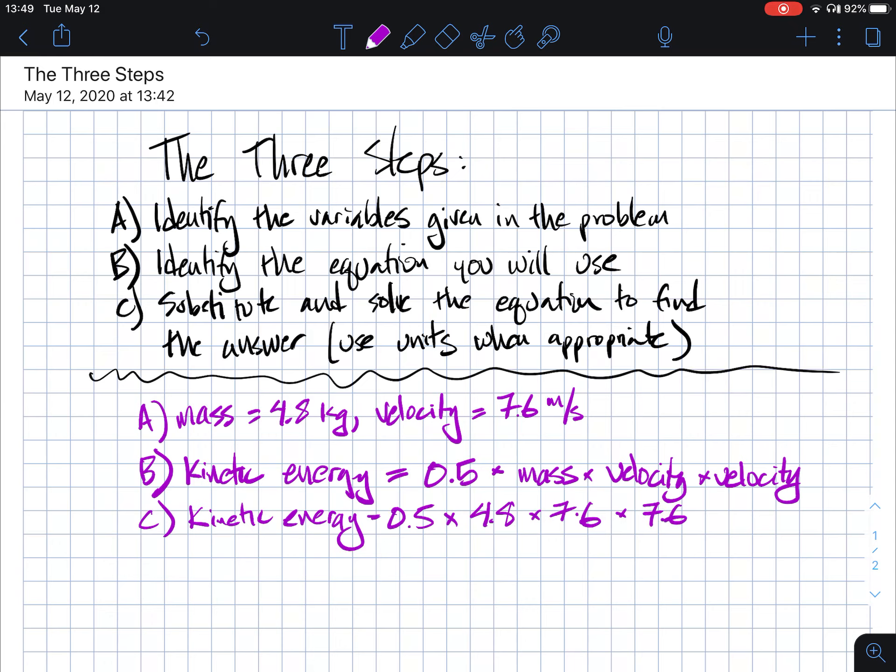And during this step of the three steps, I usually don't write units. And the reason is because sometimes the units get in the way. If you've got your equation written correctly and you've got your variables identified correctly, then once you get to this step, you can leave the units out. And when I put that into my calculator, I found that the kinetic energy of the bowling ball ended up being 138.624.